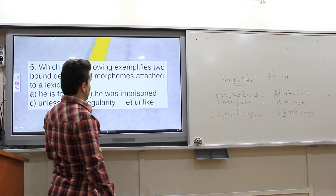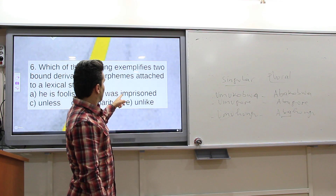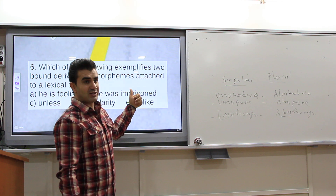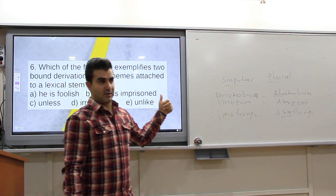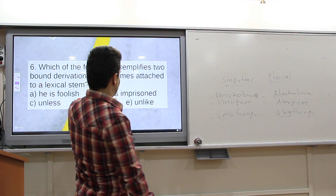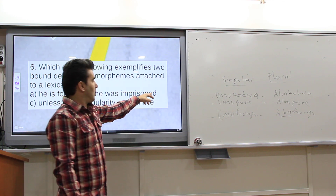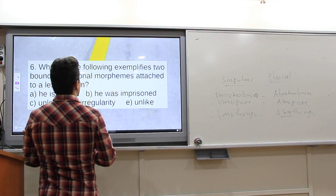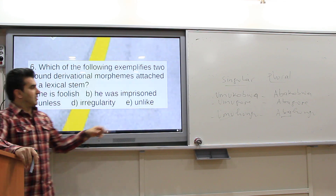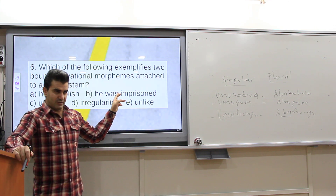What about 'imprisoned'? The morphemes here are 'in-' and '-ed,' but they are not both derivational. '-ed' is not derivational — it is inflectional. 'Im-' is derivational, but '-ed' is not. So this has both inflectional and derivational morphemes, not two derivational morphemes.